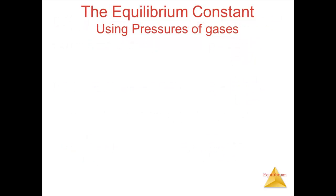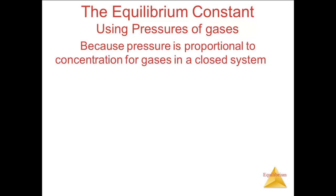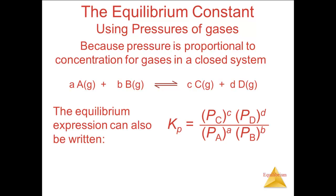The equilibrium constant using pressures of gases. For gases, the concentration of the gas and the partial pressure of the gas are proportional to each other. So if we have a reaction where the reactants and products are gases, we can write the equilibrium expression in terms of partial pressures instead of molarities. Here, P sub C means the partial pressure of gas C, and so on. Kp means the equilibrium constant using pressures. We normally use Kp because the standard state for gases is 1 atmosphere — under normal conditions, a molarity of 1 M for a gas would have a pressure of over 20 atm, far greater than we normally have for gases.